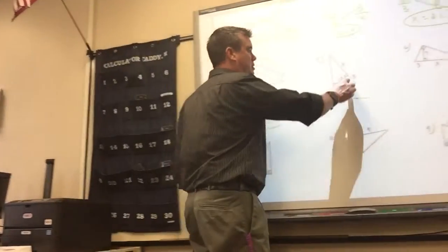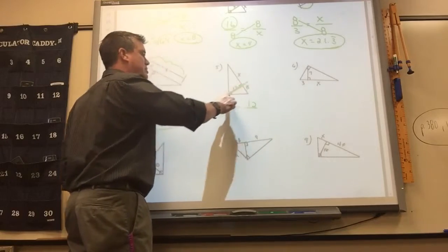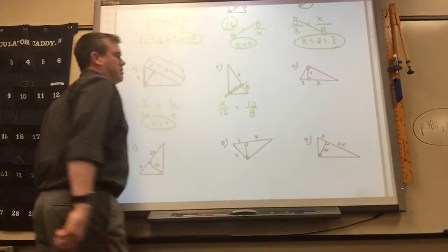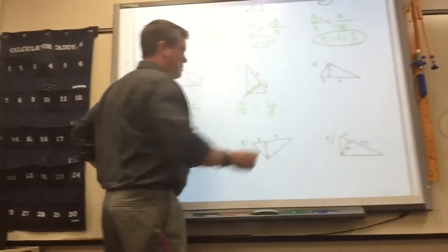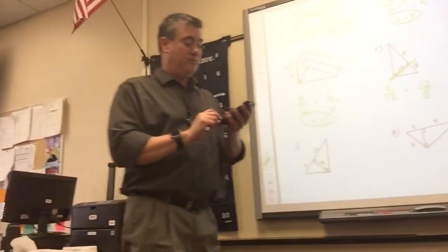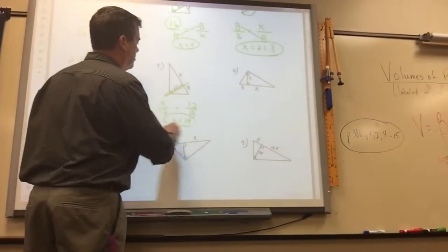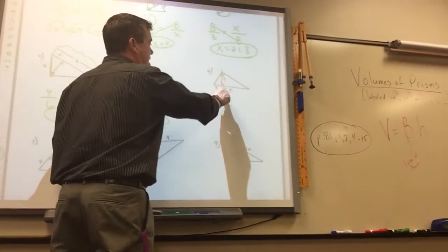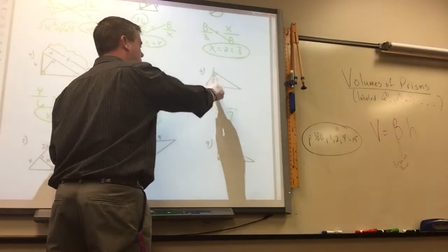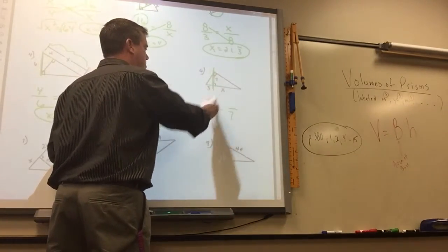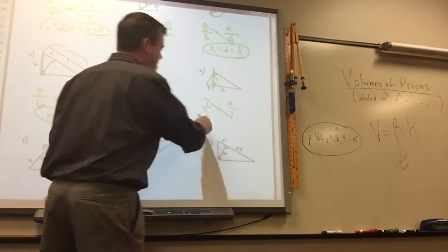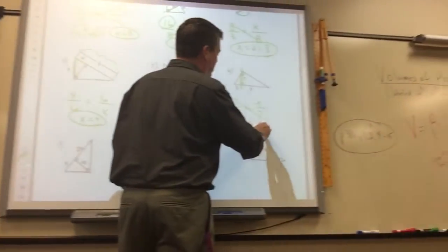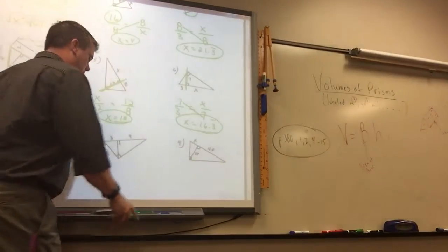Number 5 — the geometric mean is the 12. When it's this altitude piece, you put each part of the hypotenuse in there. So it's just 12 times 12 divided by 8 — that is 18. Number 6 — 7 is the geometric mean. Again, a lot of these are the altitude. When it's the altitude, you put each piece in there. So it's 7 times 7 divided by 3, which is 16.3 repeating. If it's repeating, make sure you label it.